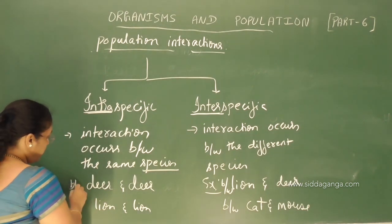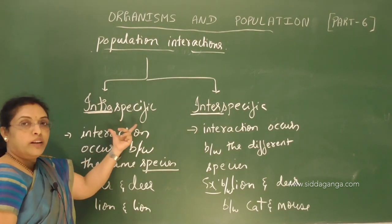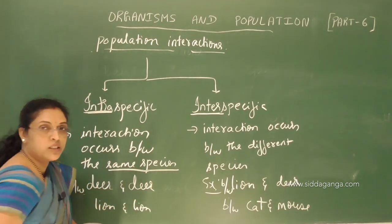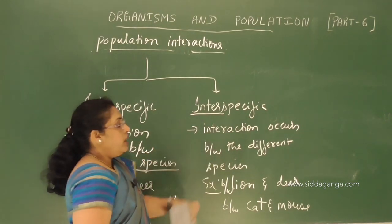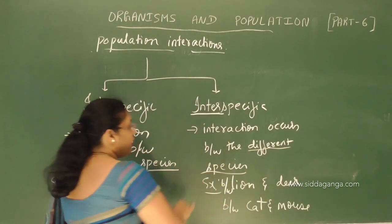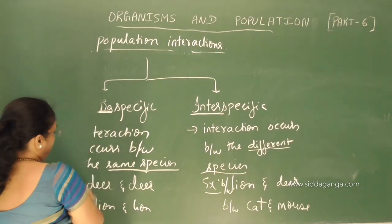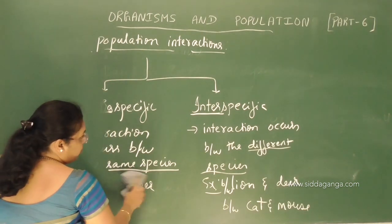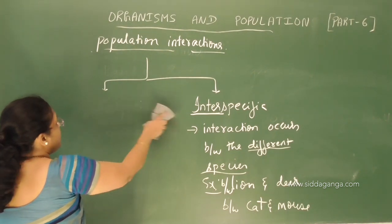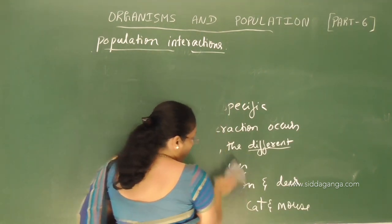So there are two types of interactions — intra and inter. Intra means when the interaction occurs between the same species. Inter means when interaction occurs between the different species. That is the difference between intraspecific and interspecific interactions among the population.